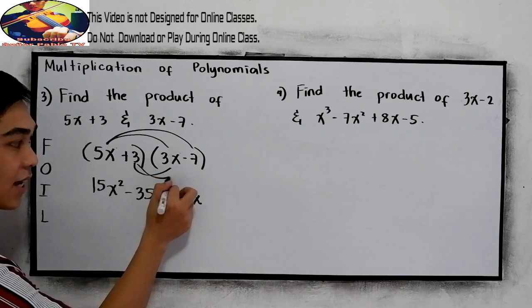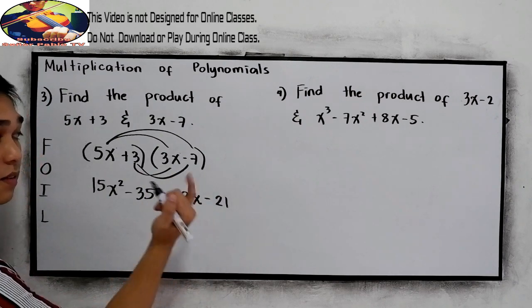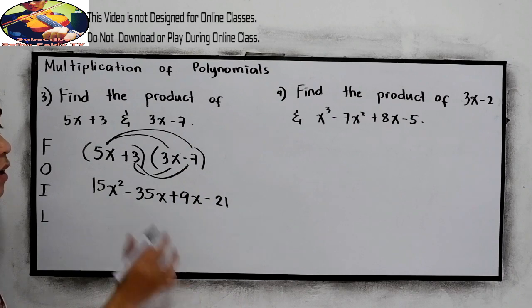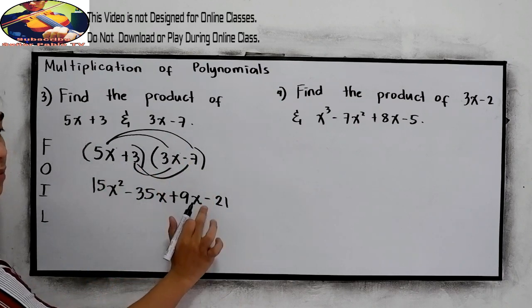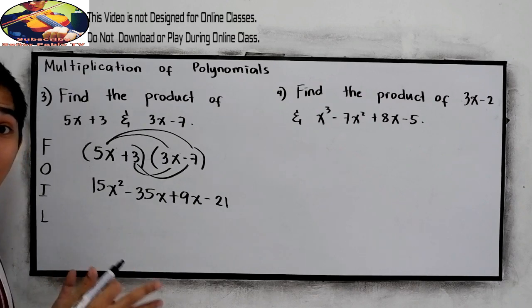3 times negative 7, negative 21. Positive times negative, that's why you have negative. Now, combine like terms.